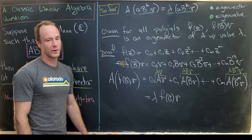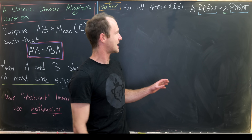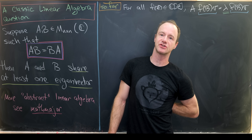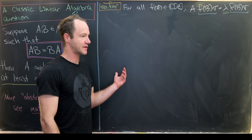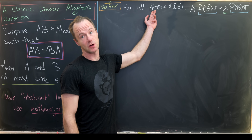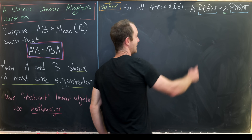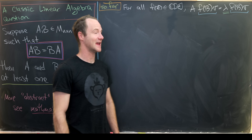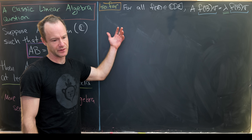Armed with this claim, we're ready to finish. We've established that given commuting n-by-n matrices A and B and an eigenvector V of A with eigenvalue lambda, for any polynomial F(Z) in C[Z], the vector F(B)V is also an eigenvector of A with the same eigenvalue lambda.